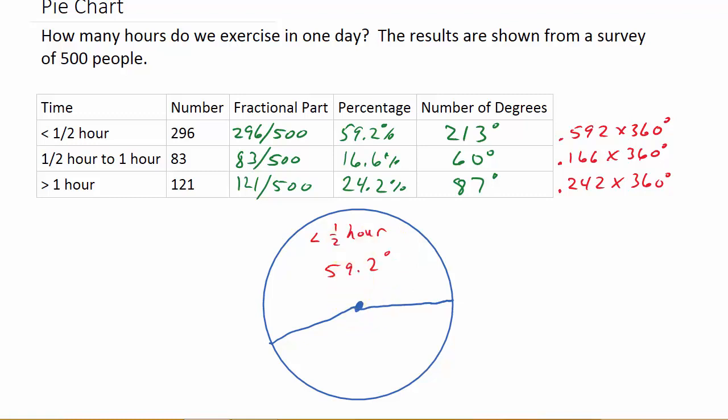So now we need a line for 60 degrees. Well, it might be kind of hard measuring 60 degrees from this line here. I could measure the 87 degrees from this line, because I know it's just before 90 degrees. And I know 90 degrees is straight down, but if I come over this way just a little bit, that's going to give me my line right there. And so, we'll call this our 87 degrees. So, that is greater than half an hour, and that is 24.2% of the people.